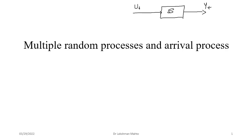Here we have two random processes, u(t) and y(t), and we try to see the relation between these two through the system dynamics. Since we are dealing with two random processes at the same time, we need to discuss multiple random processes and associated parameters. For a single random process we discussed mean, variance, autocorrelation, and autocovariance. For multiple random processes the parallel concepts are cross-correlation and cross-covariance.